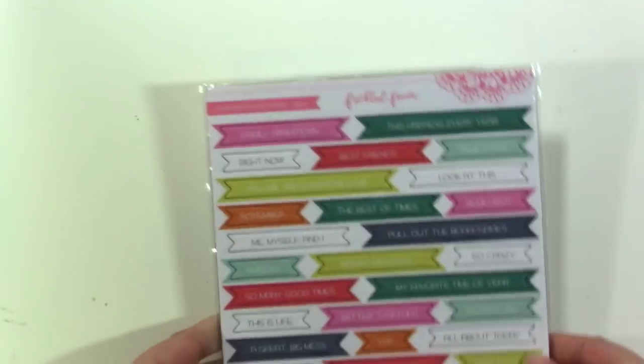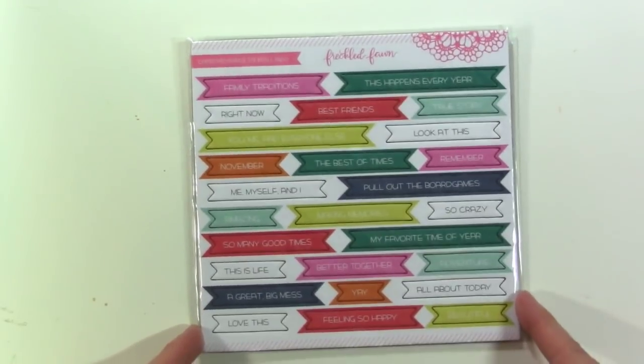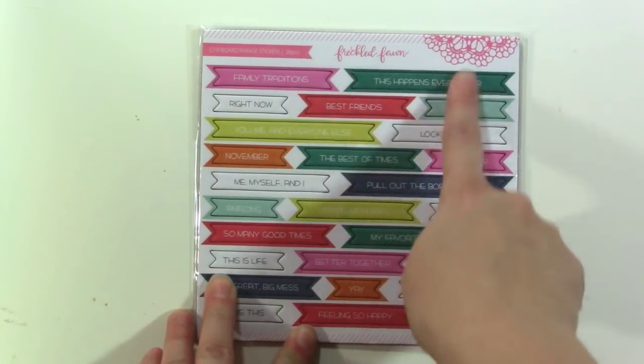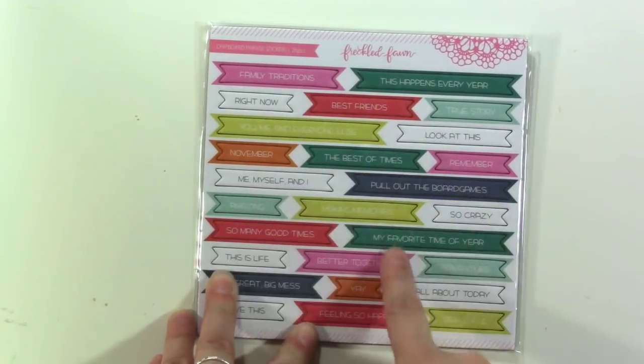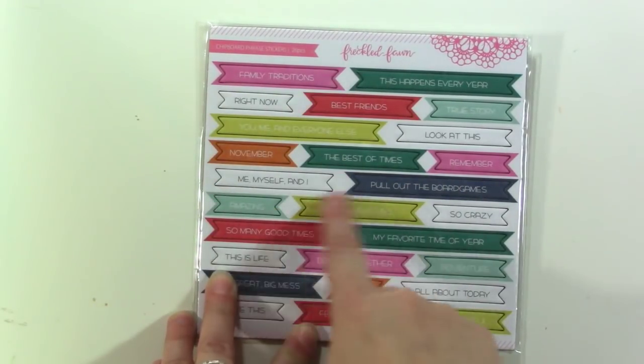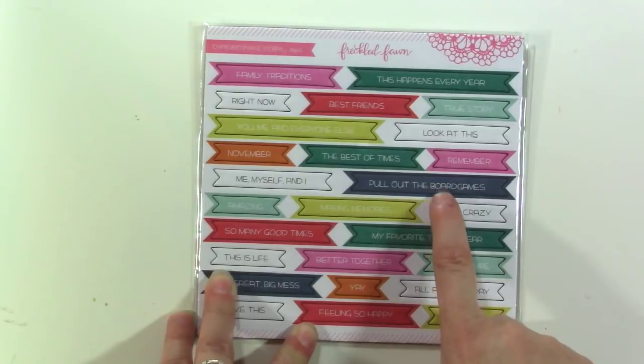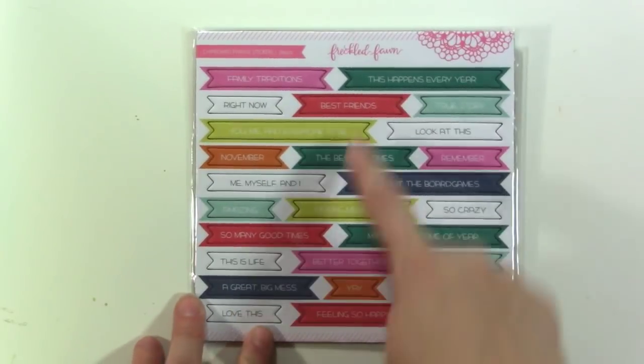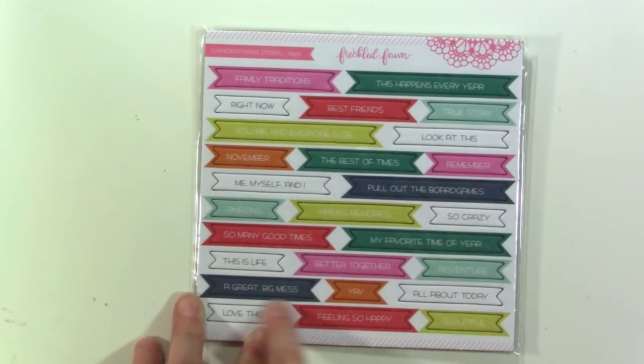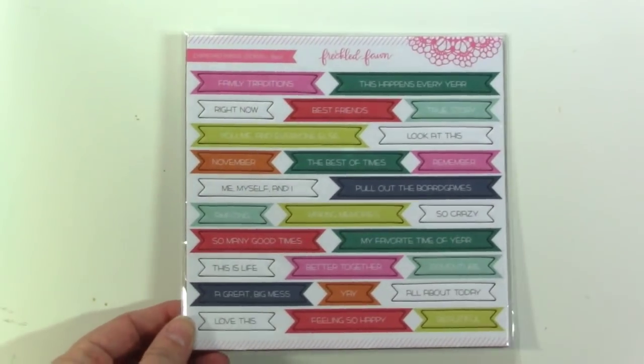Most of these items are available in the shop separately as well. Okay, then we have these chipboard phrase stickers and these are perfect. They're all in a banner shape. They have a variety of things. So family traditions, pull out the board games. We're a game family so that's a fun one. Best friends, better together, this is life. A great big mess. So very usable phrases there.